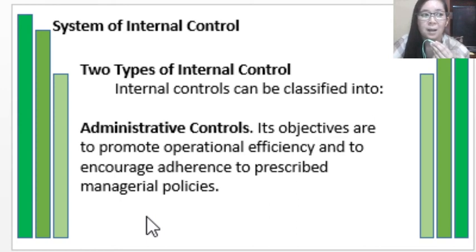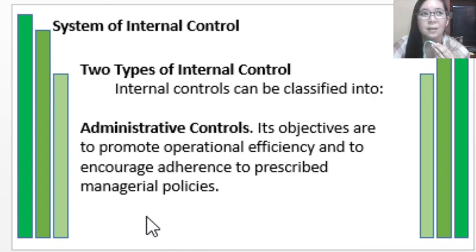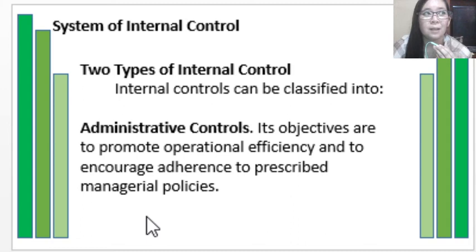In the process of authorizing transactions, certain regulations and rules must be satisfied before a transaction can be allowed — for example, signatures or approvals may be needed. A practical example is extending credit to customers: before credit is extended, the customer should be a good payer and not delinquent. Delinquent customers will not be approved for an extension of credit.